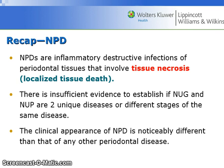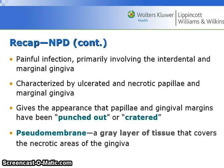NPDs are inflammatory, destructive infections of periodontal tissues that involve tissue necrosis or localized tissue death. There is insufficient evidence to establish if NUG and NUP are two unique diseases or different stages of the same disease. The clinical appearance is noticeably different than that of any other periodontal disease — a painful infection primarily involving the interdental and marginal gingiva, characterized by ulcerated and necrotic papilla and marginal gingiva, giving the appearance of being punched out or cratered. The pseudomembrane, or gray layer of tissue covering the necrotic areas, is a telltale feature, as well as the fetid breath.